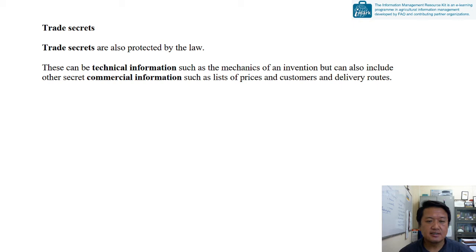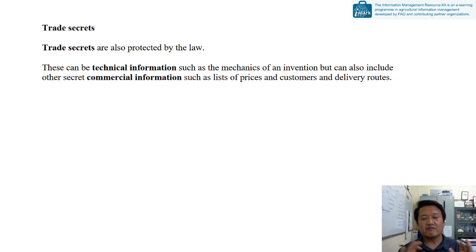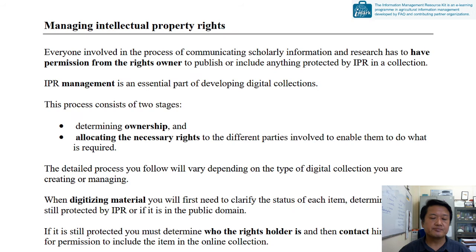Trade secrets are also protected by law. They can be technical information such as the mechanics of an invention, but can also be commercial information like price lists. For example, two competing vehicle manufacturers in the same segment will keep their prices secret until they are ready to release them. These kinds of secrets give industries a competitive advantage, and that is why trade secrets must be safeguarded under intellectual property rights.